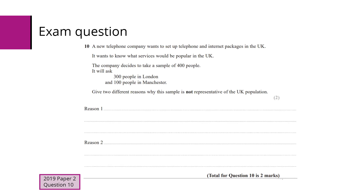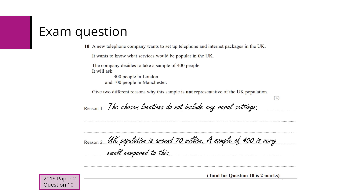Students are asked to give two reasons why this sample is not representative of the UK population. Noticing that London and Manchester are both cities, one reason is that this sampling method doesn't include any rural settings. Another option is that the UK population is around 70 million, so a sample of 400 is very small — the sample size is not large enough.